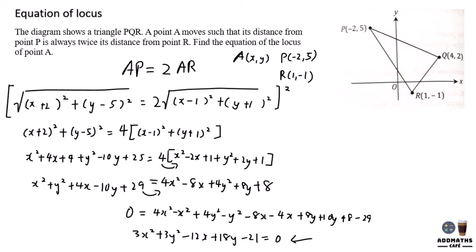You can see that it can be simplified by dividing the whole equation with 3. So you will have x² + y² - 4x + 6y - 7 = 0. This is your equation of locus. That's all for chapter 6. Thank you.